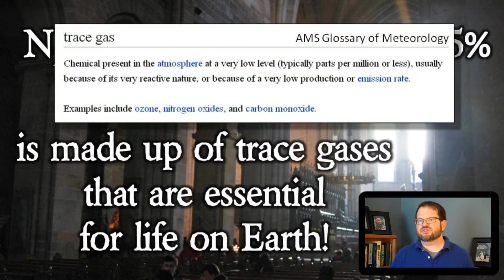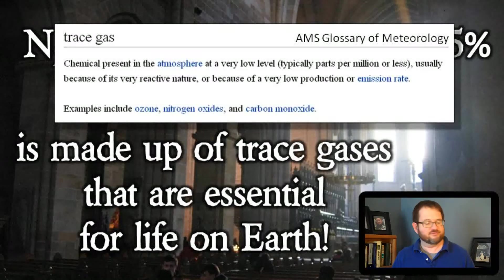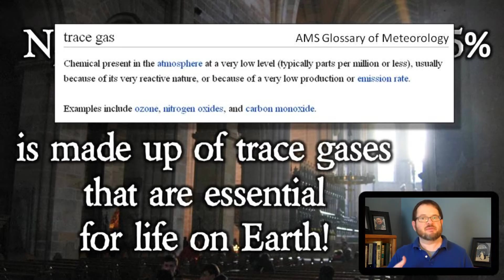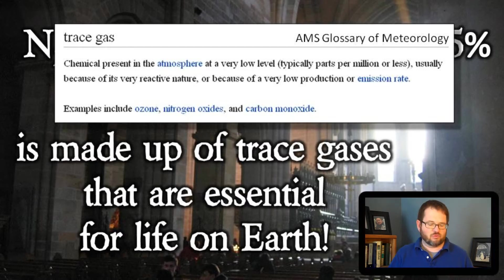A trace gas is a chemical that is present in the atmosphere at a very low level, typically on the order of parts per million or less, usually because it is very chemically active and easy to remove from the atmosphere, or because it is produced very slowly. Examples include ozone, nitrogen monoxide, and carbon monoxide — but the one we'll focus on first is carbon dioxide.